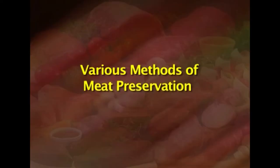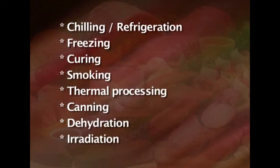After seeing the spoilage in meat, it is very important to learn about various methods of meat preservation. Meat is a highly perishable commodity due to its nearly neutral pH and high moisture content, which is rich in nutrients. Various methods employed to prolong the shelf life of meat are chilling, refrigeration, freezing, curing, smoking, thermal processing, canning, dehydration, and irradiation.